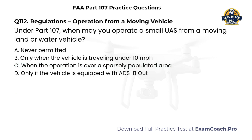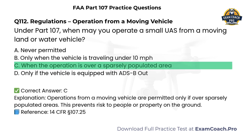Regulations. Operation from a moving vehicle. Under Part 107, when may you operate a small UAS from a moving land or water vehicle? A. Never permitted. B. Only when the vehicle is traveling under 10 miles per hour. C. When the operation is over a sparsely populated area. D. Only if the vehicle is equipped with ADS-B Out. Correct answer: C. Operations from a moving vehicle are permitted only if over sparsely populated areas. This prevents risk to people or property on the ground.